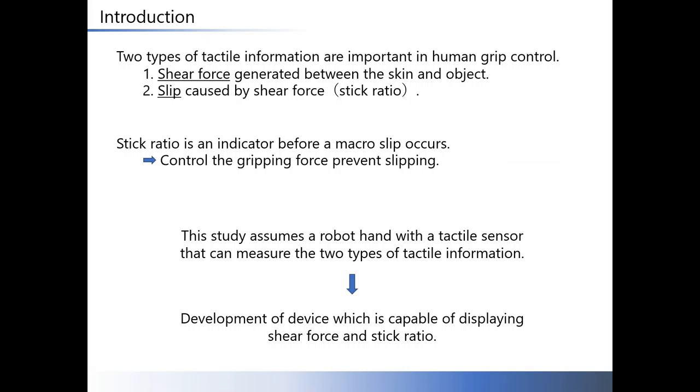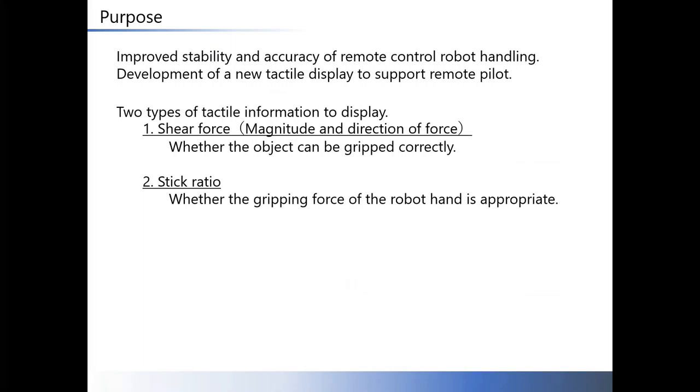This study assumes a robot hand with a tactile sensor that can measure the two types of tactile information. We develop a new device to display shear force and stick ratio. The purpose of this study is to improve the stability and accuracy of robot handling by remote control.